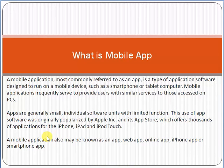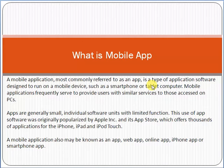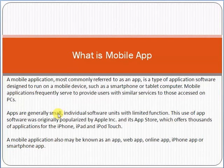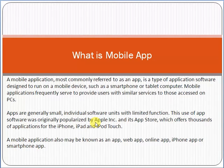A mobile app is basically a short form of mobile application. It is a type of application software designed to run on a mobile device such as a smartphone or tablet. Mobile applications frequently serve to provide users with similar services to those accessed on PCs. Apps are generally small individual software units with limited function.